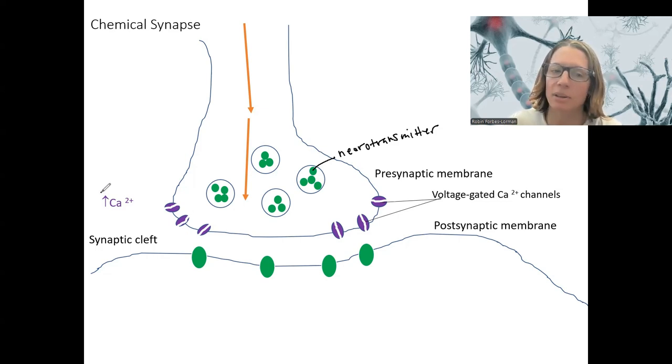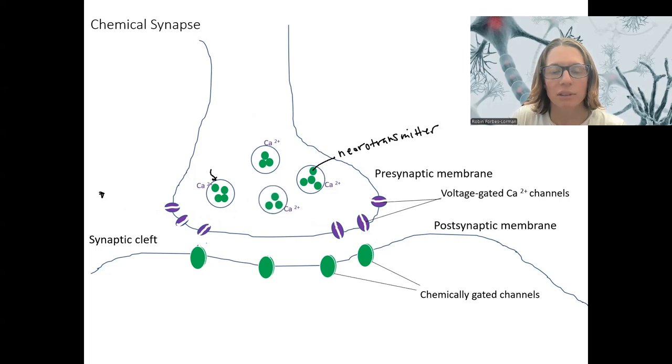There's high calcium outside. So when these channels open, calcium is going to flow into the cell, and that's going to trigger these vesicles to fuse with the presynaptic membrane and release neurotransmitter into that synaptic cleft.